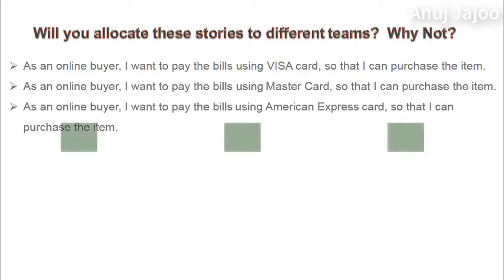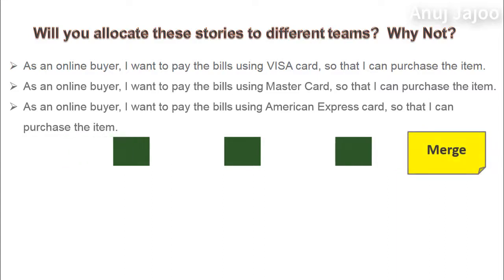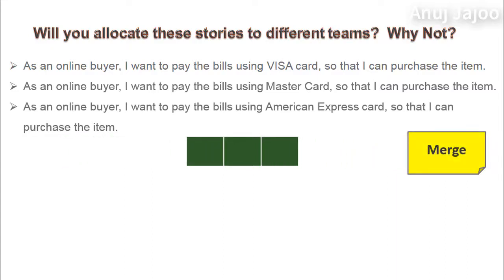These stories have a common component which cannot be independently developed. For example, the interface with the shopping cart is common across all these stories. All these stories require the same user details like shipping address, billing address, etc. These stories will also pose an estimation problem when done independently. So merging these stories to make a single story makes sense.